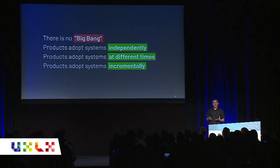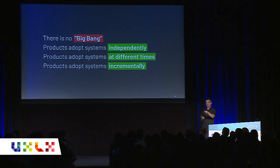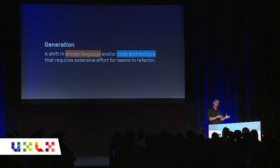As these products adopt these systems, we understand there really is no big bang anymore — no massive redesign. Each product integrates the system independently at different times on the timeline, and they do this incrementally. That's a very attractive word to most product managers — can I do this a step at a time rather than stopping all the priorities I've committed to in order to use the thing you're telling me I need to use? And then they get grouchy because your system goes through generations of change. A generation is a shift in the design language — the visual style and expression of all the components, or the code architecture behind the scenes.